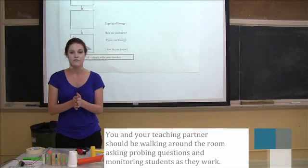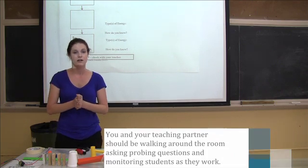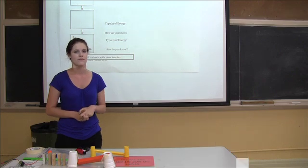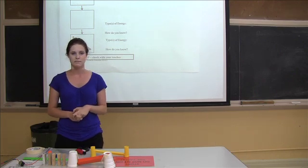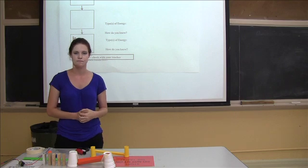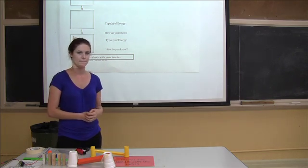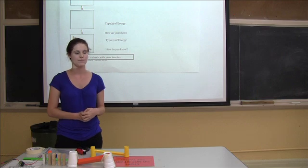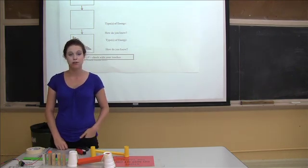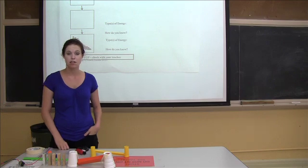So before we begin, I want to ask a few more questions. What types of machines are we building again? Rube Goldberg. And what happens in a Rube Goldberg machine? In a Rube Goldberg machine, energy conservation is used to finish a task. Very nice. Alright, so now go ahead and work with your group, fill in the rest of your worksheet, and create your Rube Goldberg machine.